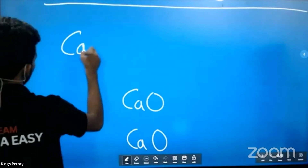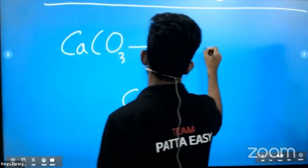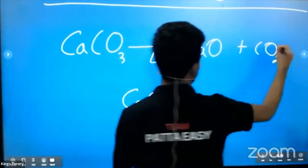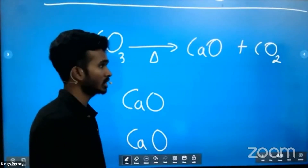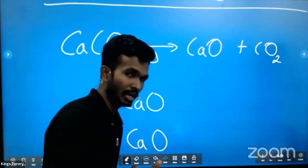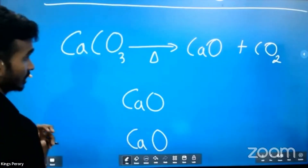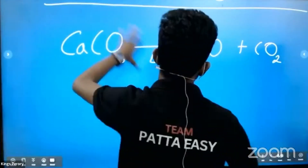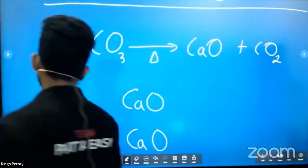When calcium carbonate decomposes: calcium oxide plus carbon dioxide. Balancing: 1 calcium, 1 carbon, 3 oxygen on the left; 1 calcium + 1 carbon + (2+1) = 3 oxygen on the right. The equation is already balanced.